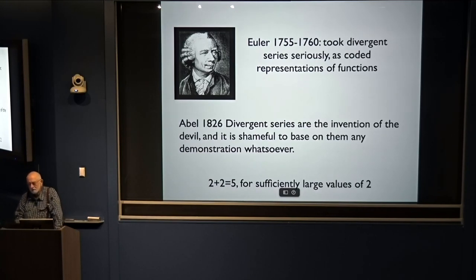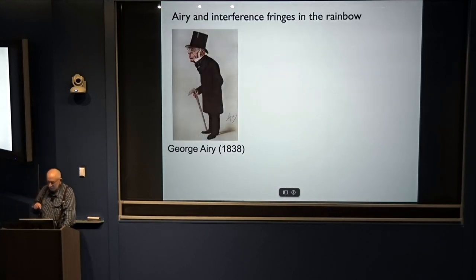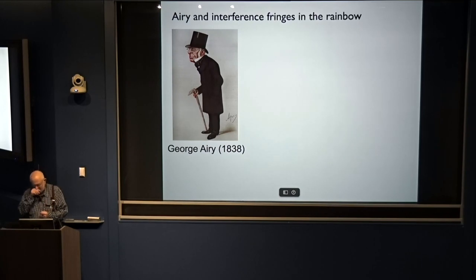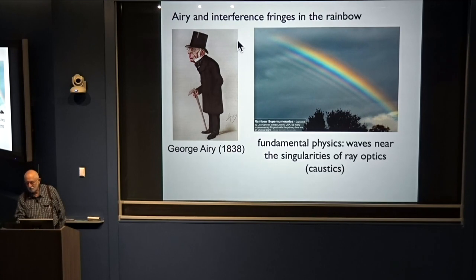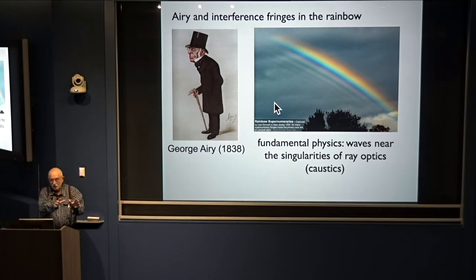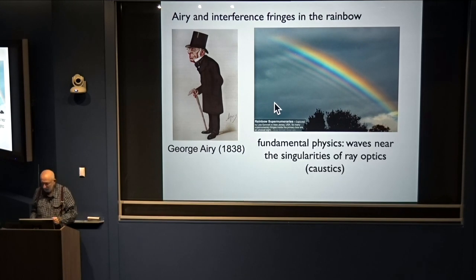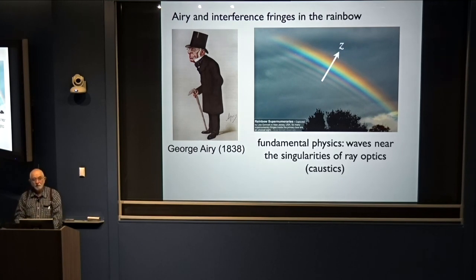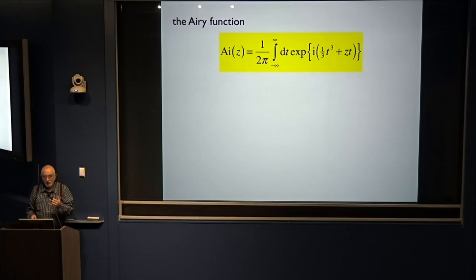The next serious step evolved from some work by George Airy, the Astronomer Royal. He was building on what Thomas Young had discovered — interference — and Young had given as one example interference fringes that you see in rainbows under suitable conditions. Airy realized he was doing something fundamental: he was looking at the new theory, wave physics, near the singularities of the old theory, which is geometrical optics, ray theory. In terms of the rainbow crossing variable, he invented what we now call the Airy function. You can move the contour a bit and it's a nice convergent integral.